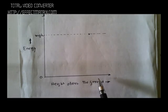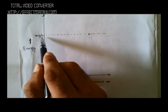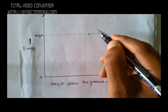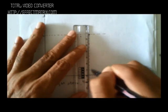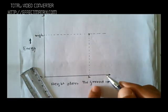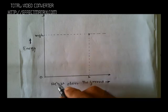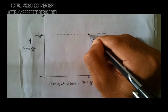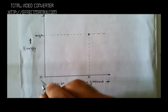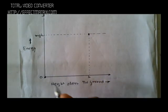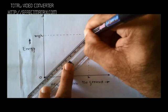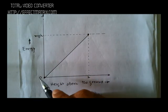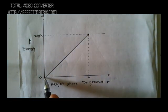The maximum energy is mgh. This is the maximum height h. At the maximum height, potential energy is maximum — mgh. At the ground, potential energy is zero. Joining these two points gives the graph for potential energy: zero at height zero, and mgh at height h.